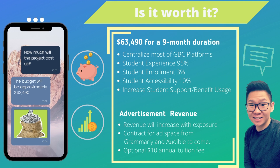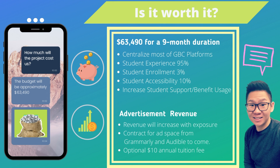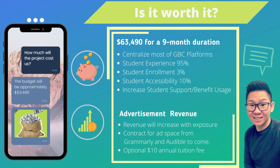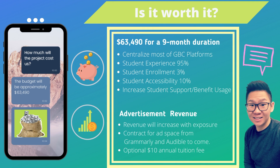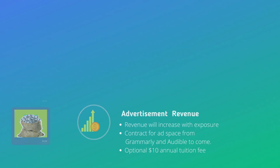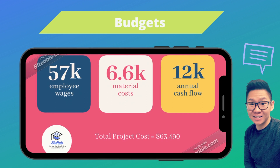The total cost of the project is estimated to be $63,490 for a nine-month duration. The StuHub app will help centralize most of GBC's platforms, and our team really wanted to focus on increasing student experience, enrollment rates, accessibility, and overall usage of student benefits. In order to recuperate this cost, our application will have integrated advertising space that will bring in monthly revenue. Currently, we have contract agreements in the works with Grammarly and Audible, and revenue will only grow with more exposure. Additionally, a $10 annual tuition fee will be optional for students to help our cause. The breakdown: $57,000 will be allocated to employee wages, $6,600 to material costs, and $12,000 will be your annual cash flow, with a projected cost of $63,490.